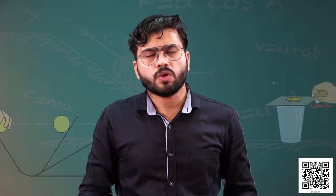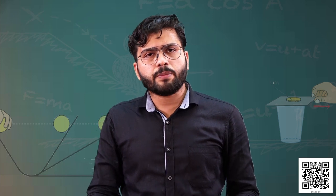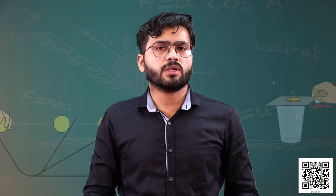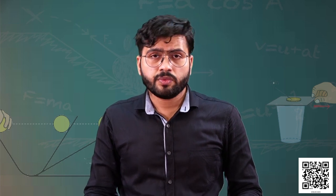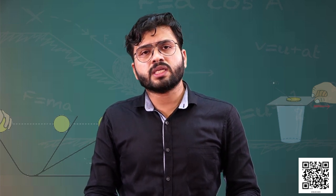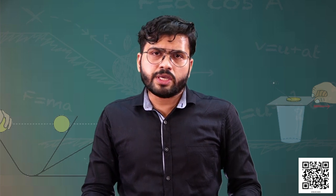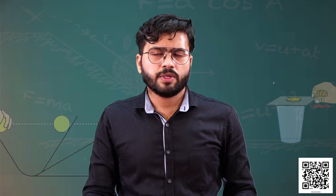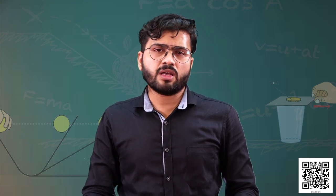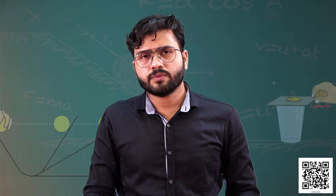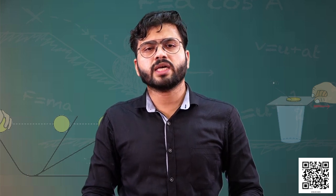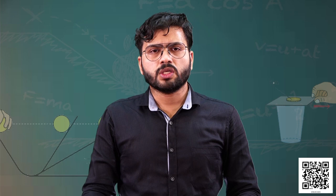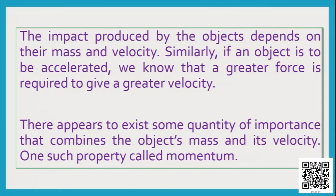We conclude that impact depends on the mass of the object as well as the velocity at which it is moving. There is a certain quantity that correlates mass and velocity of an object, and we call it momentum. The impact produced by objects depends on their mass and velocity.